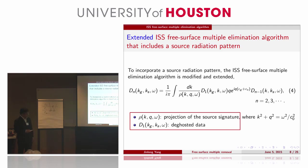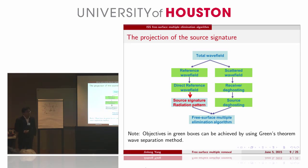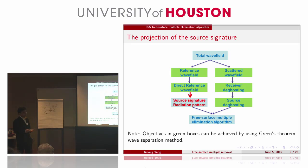The flowchart is like this. We have our marine data — total data — and we use Green's theorem method to separate the reference wavefield and the scattered wavefield, as mentioned in Dr. Wecklen's Green's theorem wave separation tutorial, and also in Jin Wu's Green's theorem application. Then we deghost this data by the receiver-side ghost and the source-side ghost. We also need to get the direct wavefield, which can be achieved by the Green's theorem separation method. And we need to get the source signature or the source radiating pattern in the algorithm that includes the source radiating pattern.